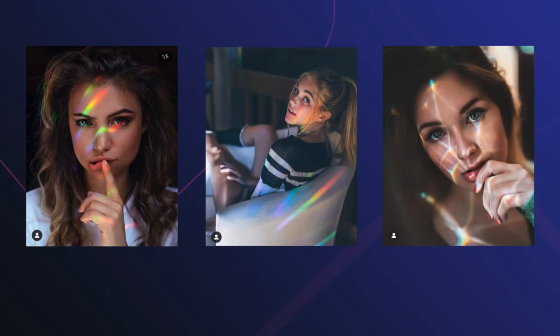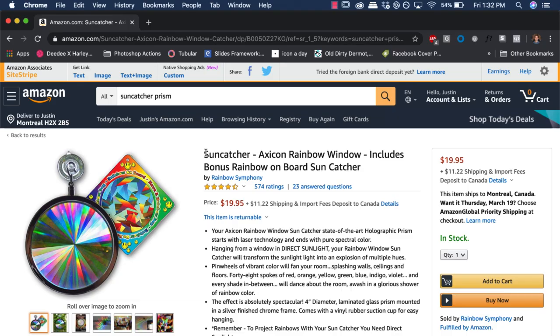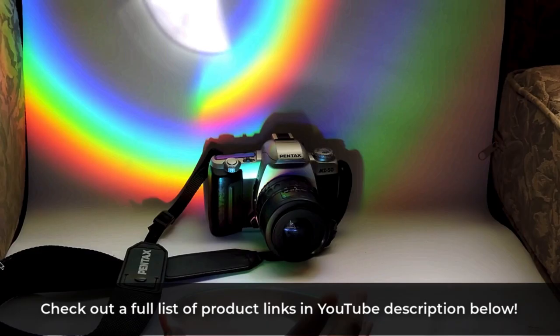First up on our list, let's talk about how we can add colorful light textures by using a special prism to refract direct light and emit colorful rainbow effects onto your model. These types of prisms vary greatly and include things like suncatcher prisms, triangular prisms, the underside of CDs, stained glass, window stickers, as well as simple chandelier jewels.